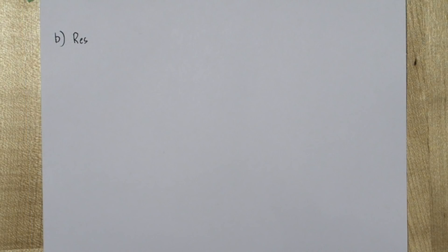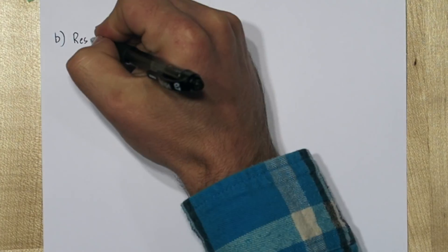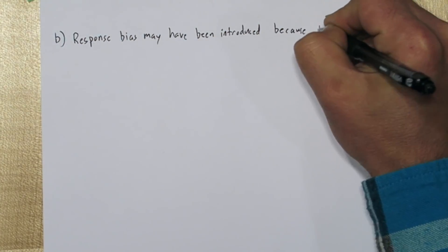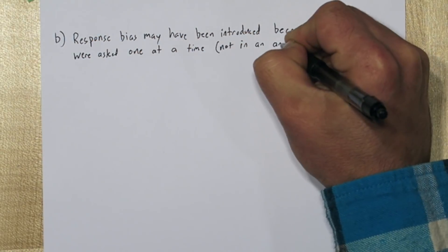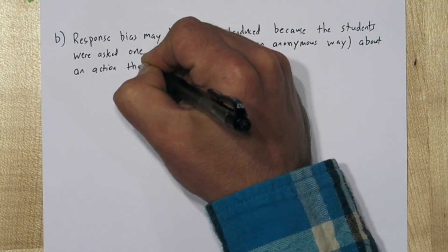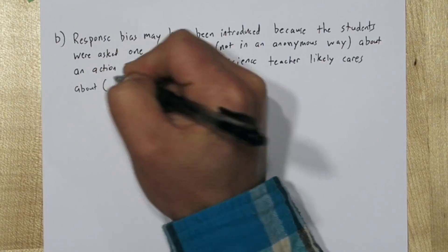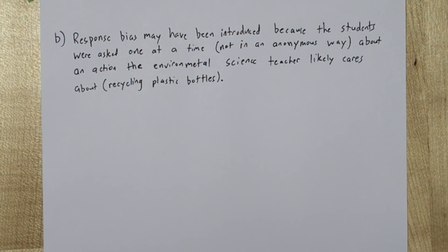So in part B, we start investigating the pretty bad way this environmental science teacher conducted their study. So we'd expect response bias here. Response bias may have been introduced because the students were asked one at a time, not in an anonymous way, about an action their environmental science teacher likely cares about, recycling plastic bottles. Now this would be an intimidating situation and you'd likely respond yes.